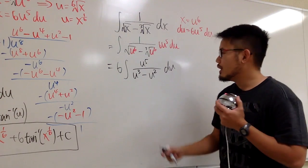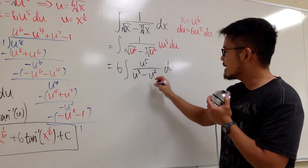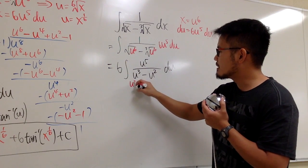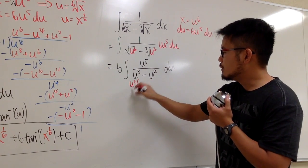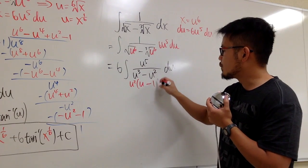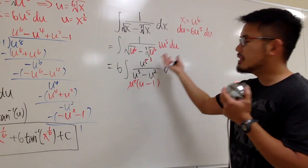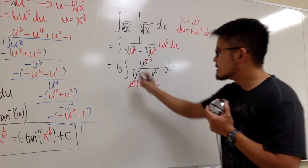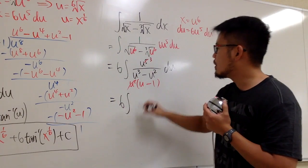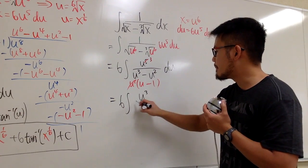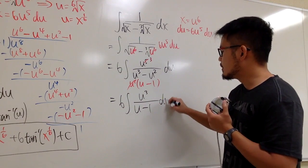On the bottom we have u cubed minus u squared, so we factor out u squared to get u squared times (u minus 1). The u squared on the bottom cancels with u to the 5th on top, leaving u cubed on top. So we now have 6 times the integral of u cubed over (u minus 1) du.